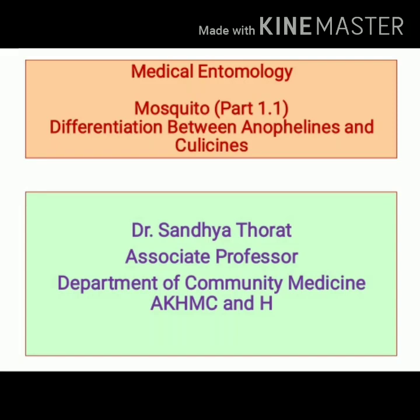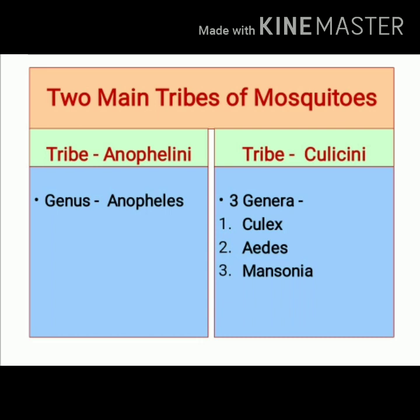Let's begin with a new vector. The name of this vector is mosquito, and in this part I would like to discuss the differentiation between Anophilines and Culicines. There are two main tribes of mosquitoes: tribe Anophiline and tribe Culicine. Tribe Anophiline includes only one genus called Anopheles.